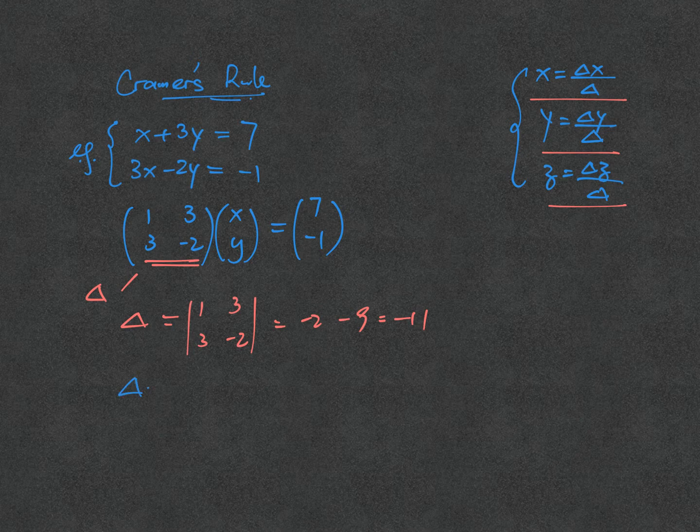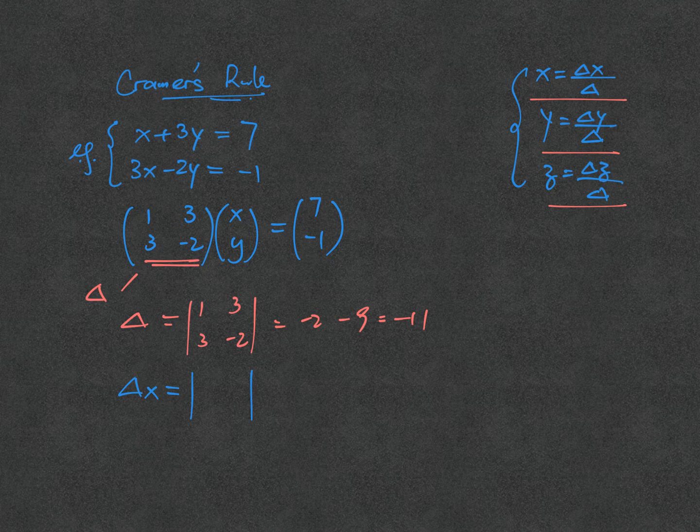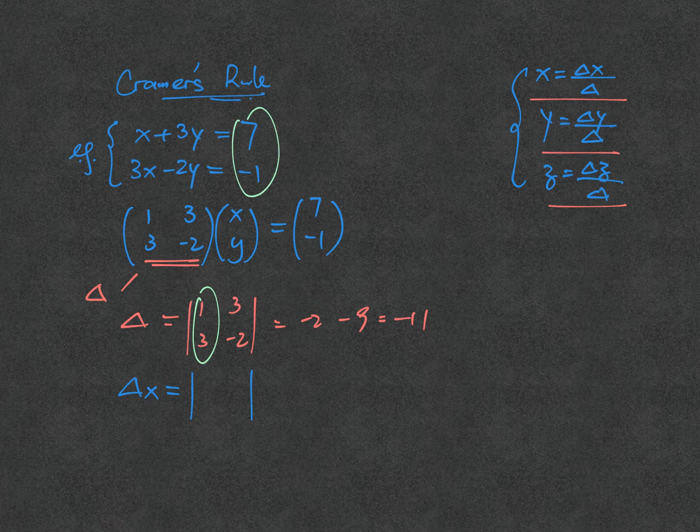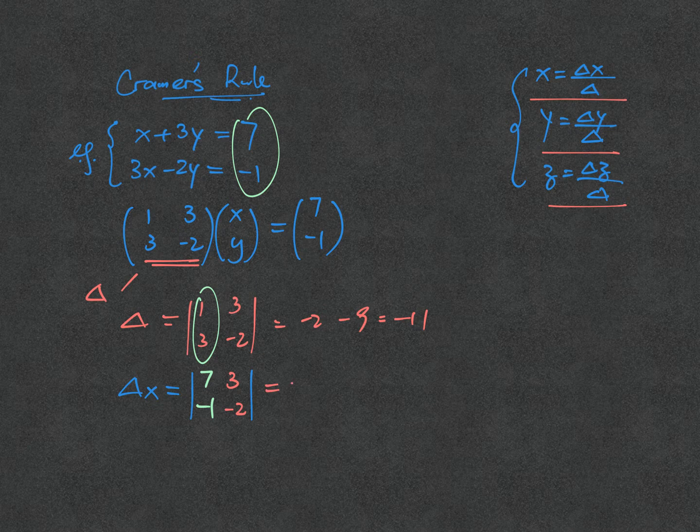The meaning of delta x: we use this matrix as the basis, but we change the numbers 1, 3 by the column 7, minus 1 when finding delta x. So it's 7, minus 1 here, keeping 3, minus 2 in the determinant, which gives minus 14, plus 3, which is minus 11.